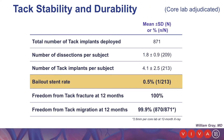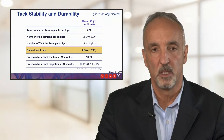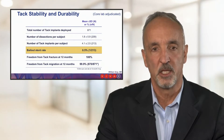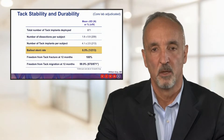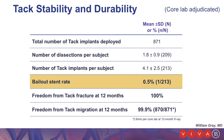TAC stability and durability are listed here. The total number of TACs implanted in this trial was 871, with 1.8 dissections per subject and 4.1 TAC implants per subject. Remarkably, the bailout stent rate in this 100% dissected population was 0.5%, with only one patient out of 213 receiving a stent. Freedom from TAC fracture at 12 months was 100%, and freedom from TAC migration was 99.9%.